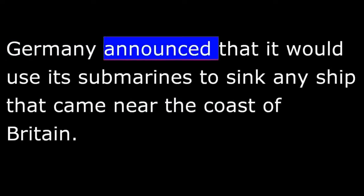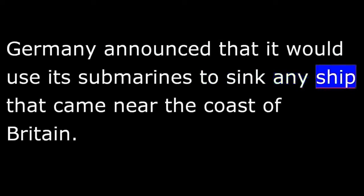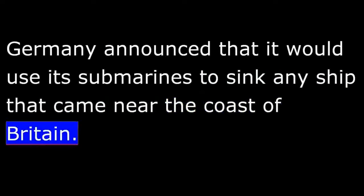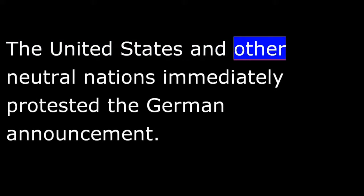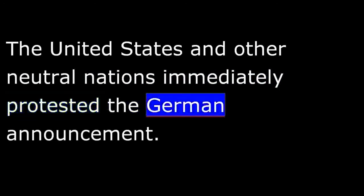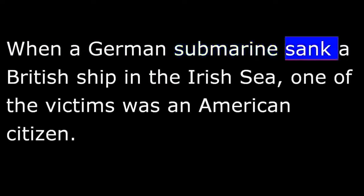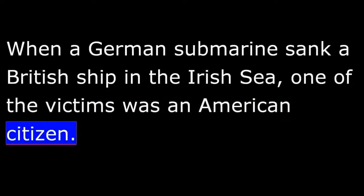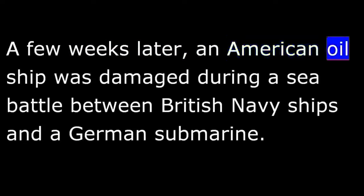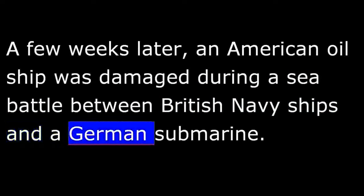Germany announced that it would use its submarines to sink any ship that came near the coast of Britain. The threat included ships from neutral nations trying to continue trading. The United States and other neutral nations immediately protested, saying it was a clear violation of international law. When a German submarine sank a British ship in the Irish Sea, one of the victims was an American citizen. A few weeks later, an American oil ship was damaged during a sea battle between British Navy ships and a German submarine.